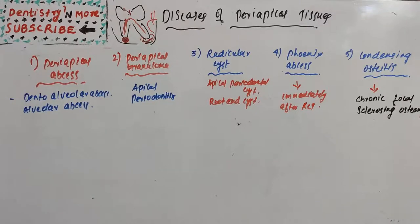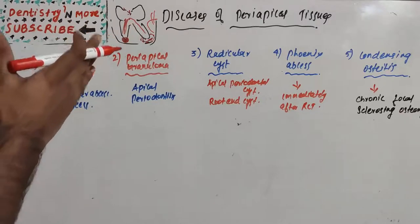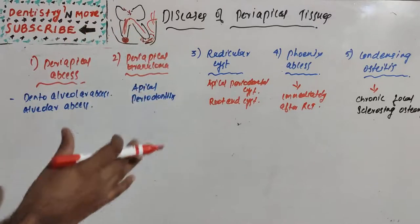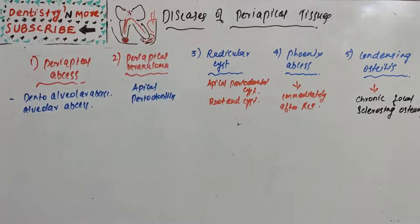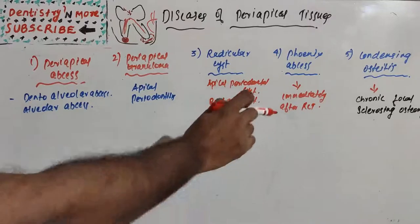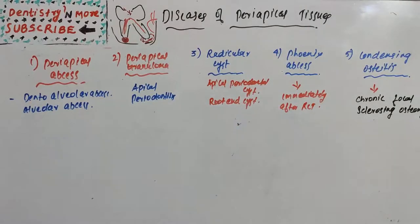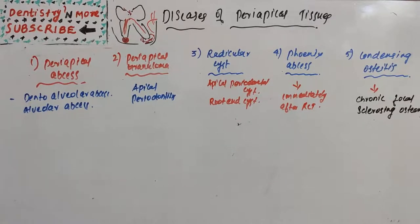It could be a long essay. Diseases of periapical tissues include: periapical abscess, periapical granuloma, radicular cyst, phoenix abscess, and condensing osteitis. Condensing osteitis is commonly asked in oral medicine and radiology; the others are asked in endodontics, oral pathology, oral surgery, and oral medicine and radiology.